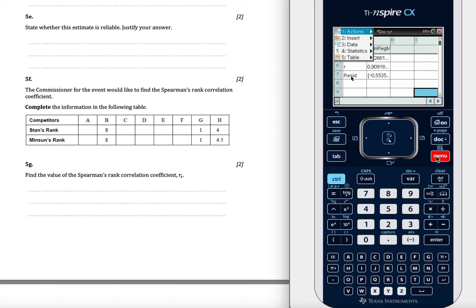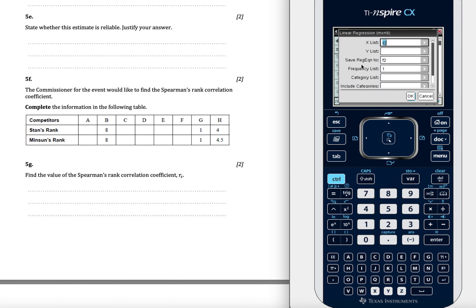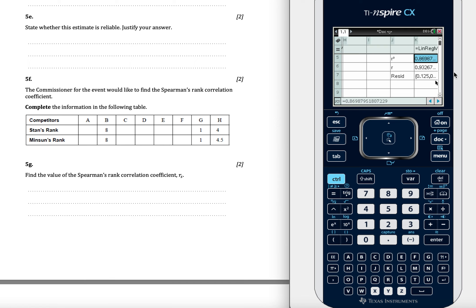So let's do menu, statistics, stack calc. Might as well do it in linear regression. So our X list this time was Stan's rank. Y list is Minson's rank. We're going to whip through all of these. We've got one of each. We can put it in J column. At this stage, it doesn't really matter as long as we don't overwrite the data in A, B, C, or D. We hit enter, and we get an R value of 0.93267, which rounds to 0.933.